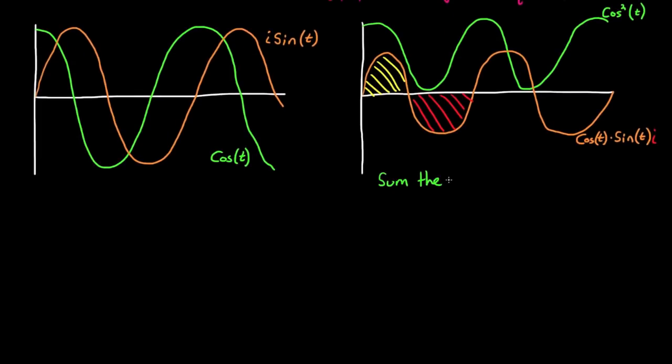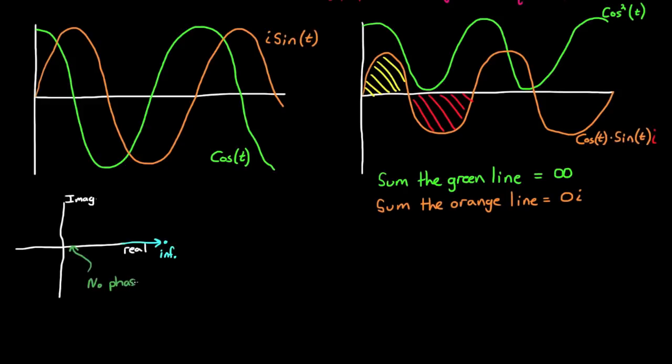So you'd expect to have no imaginary component and a really large number for the real component. In fact, you'd expect an infinitely large number, since the area under the green curve for all time would approach infinity. And if you plotted this point in the real imaginary plane, you'd be able to find out what the phase and the amplitude were. And since the transform output is real, the angle off the real line is 0 degrees, which corresponds to a 0 degrees phase shift, which is a cosine wave. And what's the amplitude? Well, here it says that it's infinity.